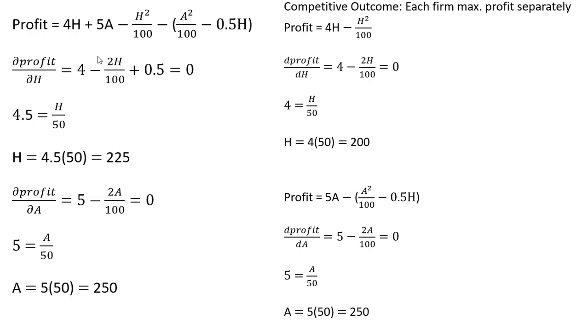Finally, looking at the profit for the apple producer separately and taking the derivative of that with respect to apples, setting the derivative equal to 0, the profit maximizing level of apples here would be 250 in this problem. I hope you found this video helpful.